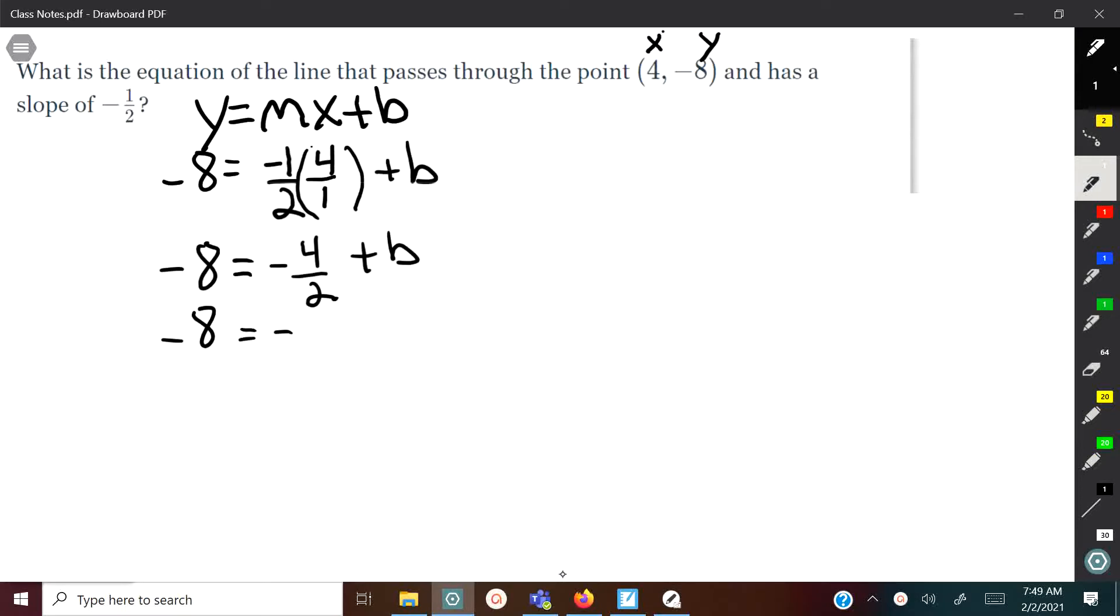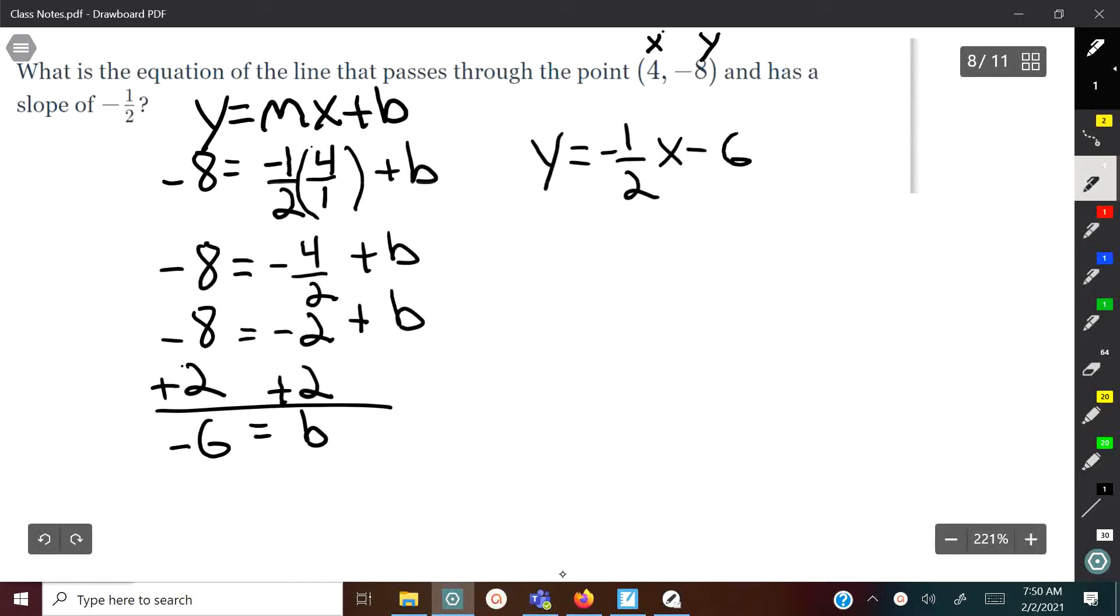I've got negative 4 divided by 2. Negative divided by positive is negative. 4 divided by 2 is 2. Then we keep working—add 2 on both sides. Negative 8 plus 2 will be negative 6. So we know that b is negative 6. Now we write the equation with the slope: y equals negative 1 half times x minus 6. And that's your answer.